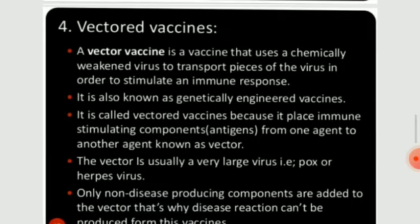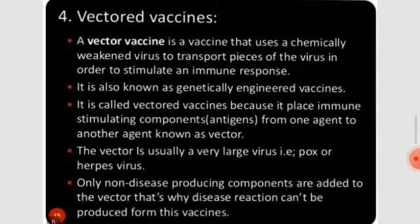Next is vector vaccines. A vector vaccine uses a chemically weakened virus to transport pieces of a virus in order to stimulate an immune response. It is also known as a genetically engineered vaccine. It is called a vector vaccine because it carries immune-stimulating components from one agent to another agent known as a vector. This vector is usually a large virus such as ox or herpes virus, and only known disease-producing components are added to the vector.